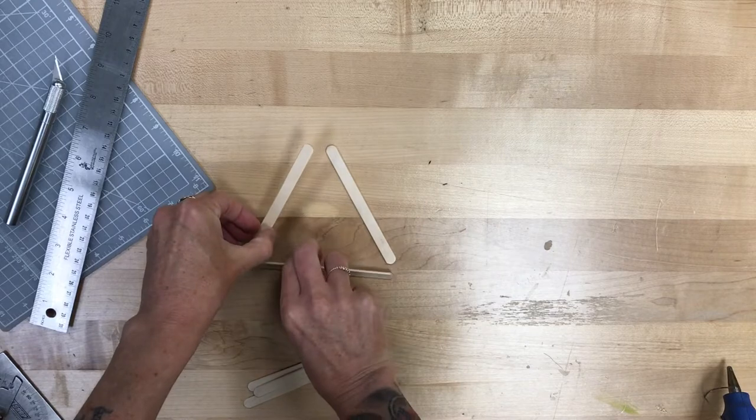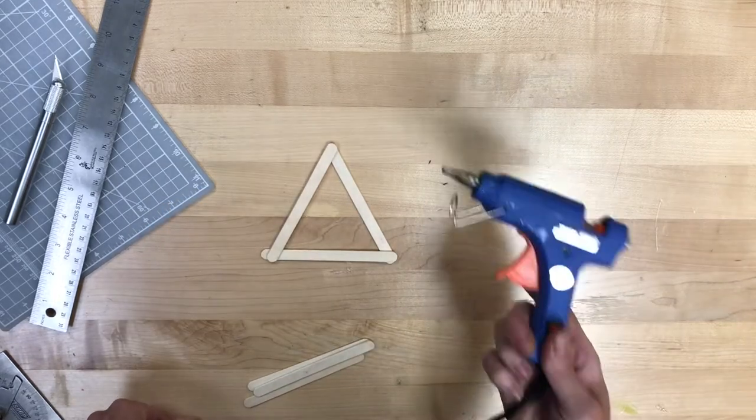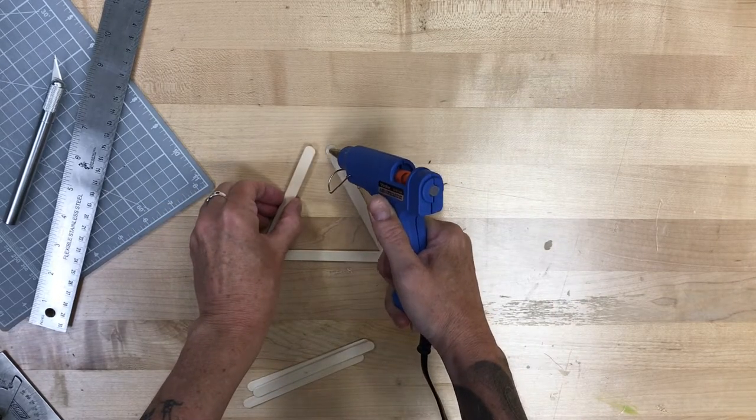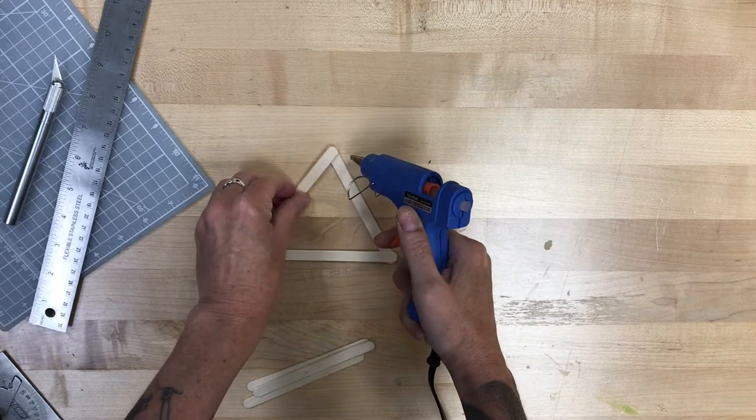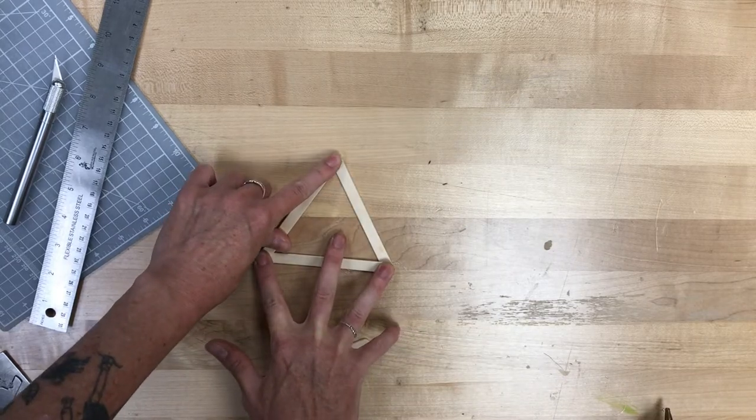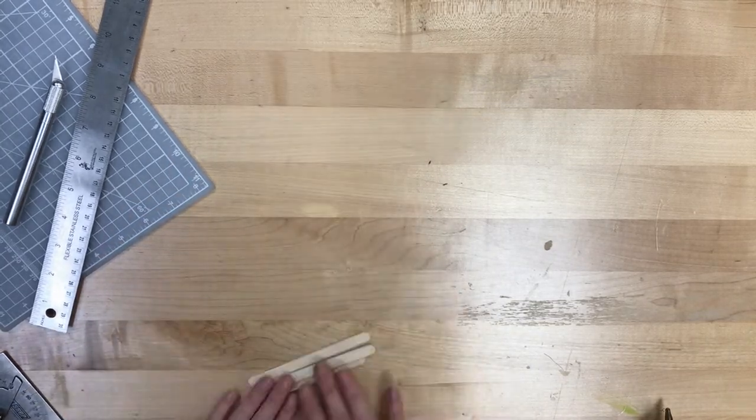So we're going to start out with eight popsicle sticks. We're going to take the first three, we're going to use a hot glue gun and we are going to fix them in a triangle pattern. Just glue in those corners.